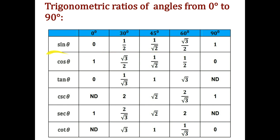Since cosecant theta is the reciprocal of sin theta, cosecant 0° is not defined (1/0). The values of cosecant are the reciprocals of the corresponding sine values.